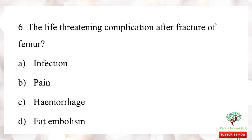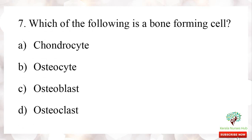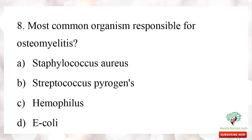Which of the following is a bone forming cell? The options are chondrocyte, osteocyte, osteoblast, and osteoclast. The bone forming cells are osteoblasts, whereas osteoclasts help in bone resorption.